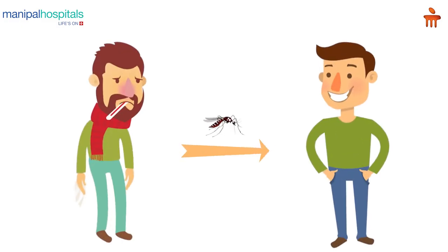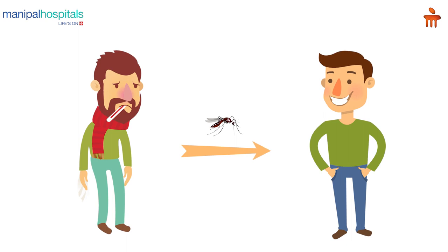Dengue is not transmitted by direct human-to-human contact. However, it can happen if a mosquito bites an infected human being and the virus replicates in the mosquito. It takes around 8 to 10 days for the virus to replicate in the mosquito — this is called the extrinsic incubation period. If this mosquito then bites a healthy human being, that person can be infected with dengue. So there is no direct human-to-human transmission by touching or holding hands, but it can be transmitted through mosquito bites.